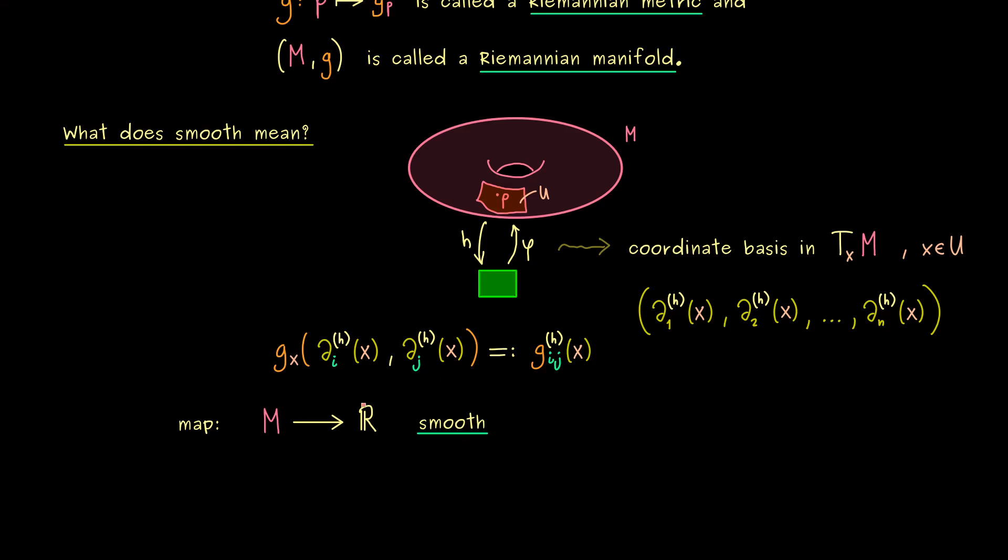And there you see this is what we want in the definition of a Riemannian metric. We want that this map that sends x to the number g_ij is a smooth one, no matter which i,j we consider.